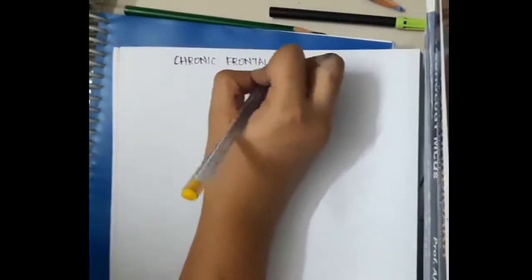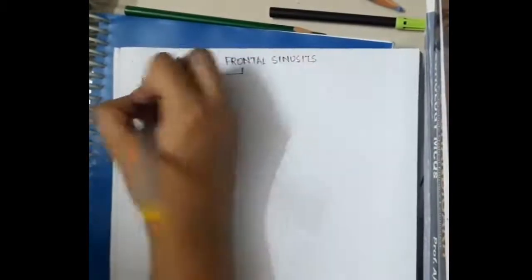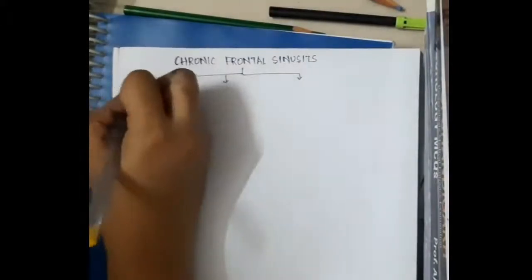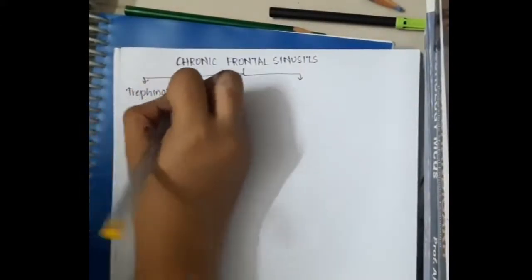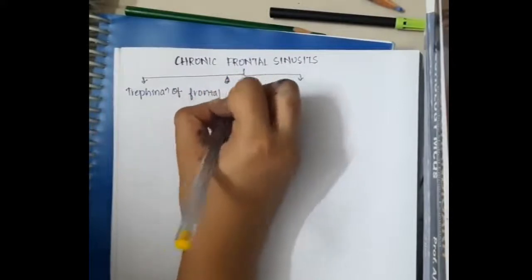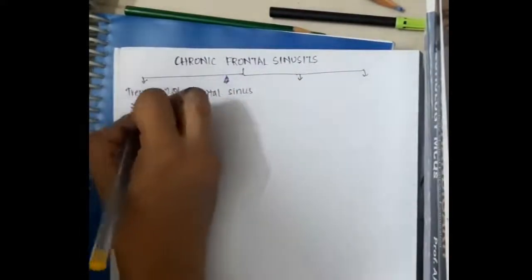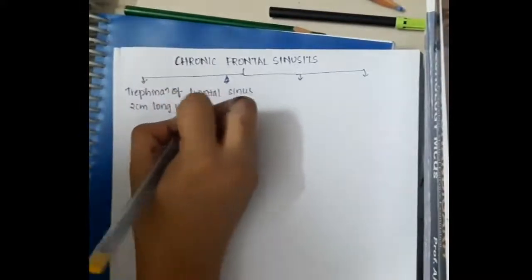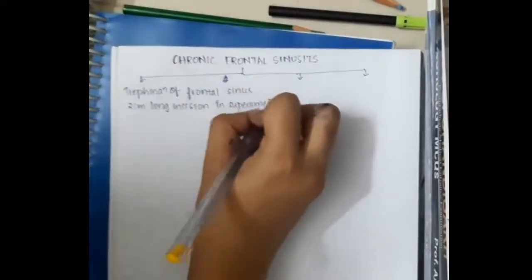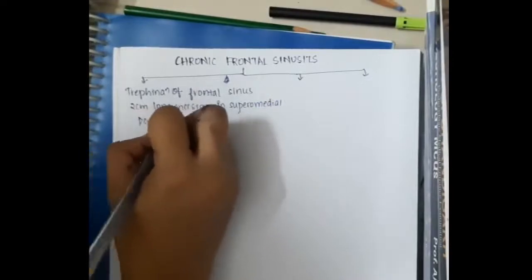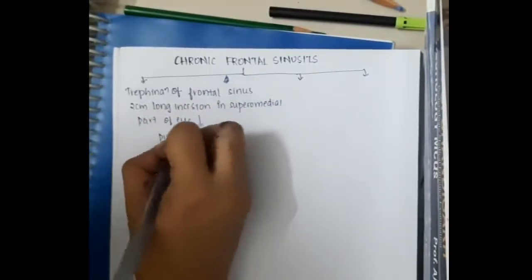Then the next type of sinusitis which is chronic frontal sinusitis, it is treated by one, trefination of frontal sinus, where in trefination of frontal sinus, we put 2 cm long incision in the superior medial part of the eye and we will drain the pus.